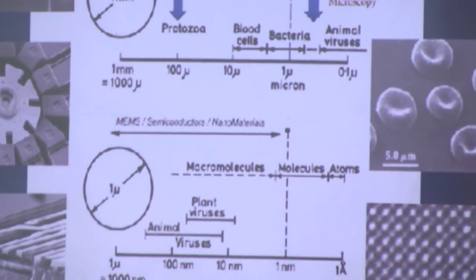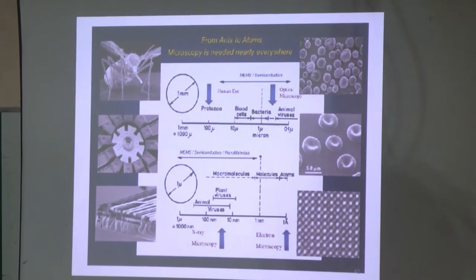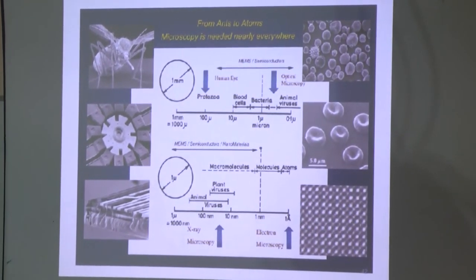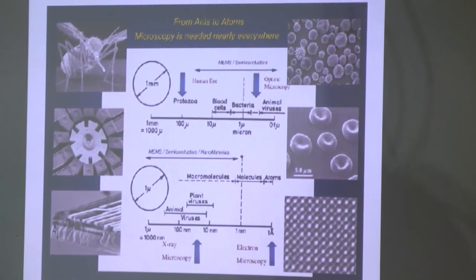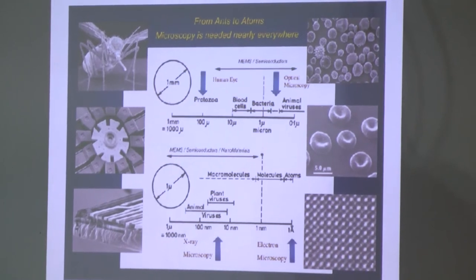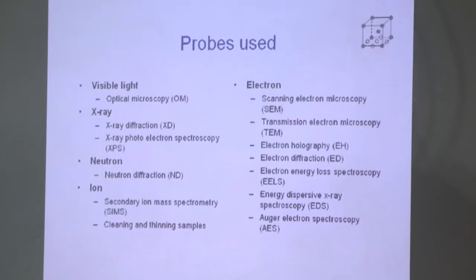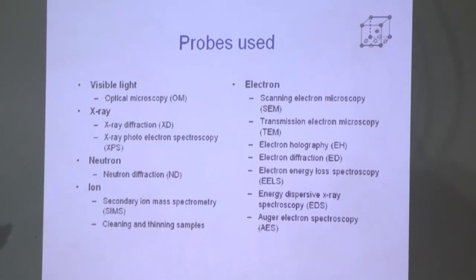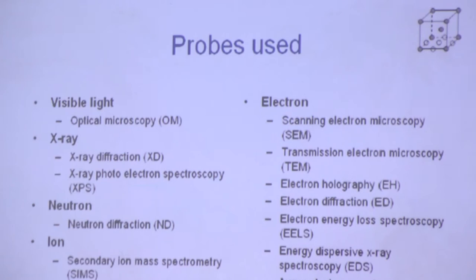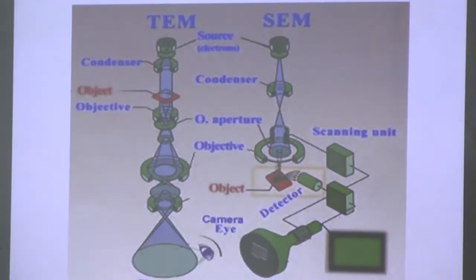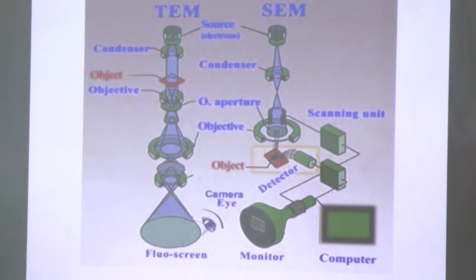The human eye can see down to a certain range; optical microscopy can extend that further, but it has limitations. Instead of light, we now use electrons as the probing source, which is why it is called scanning electron microscopy. Because of the small size of electrons, you can go down to one angstrom or one nanometer very easily. Various probes we can use include visible light, X-rays, neutrons, ions, and electrons.